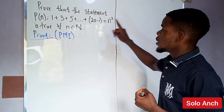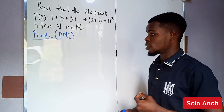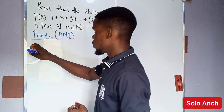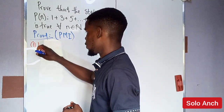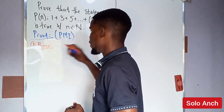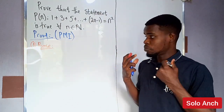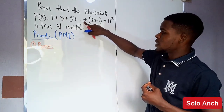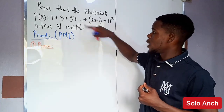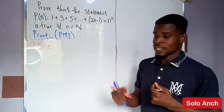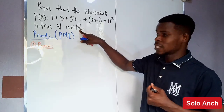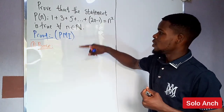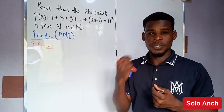To prove this using PMI, we start with the base case — also called the verification case. We verify whether the statement is true when n equals the first natural number, which is one. We check if it holds when the number of odd numbers we are adding is one.